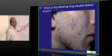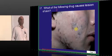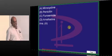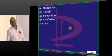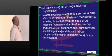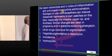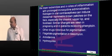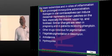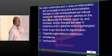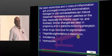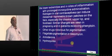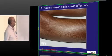Which drug causes these hyperpigmented lesions? Minocycline is known to lead to development of hyperpigmented lesions — a very classical question. Other drugs notorious for pigmentation: flagellate pigmentation is seen with bleomycin, amiodarone, and hydroxyurea — three drugs to be remembered for pigmentation.